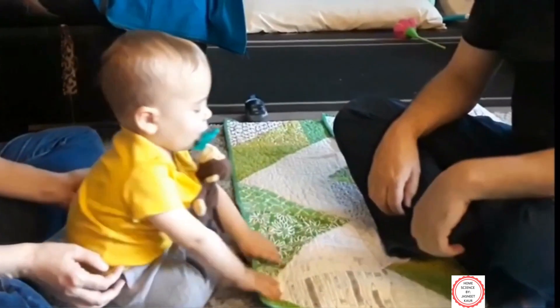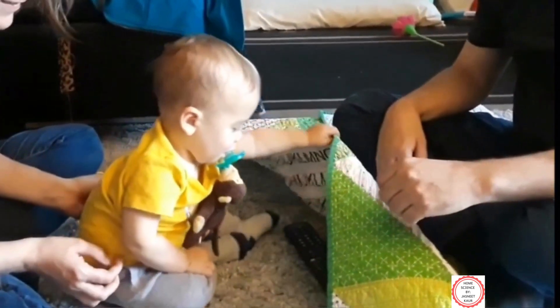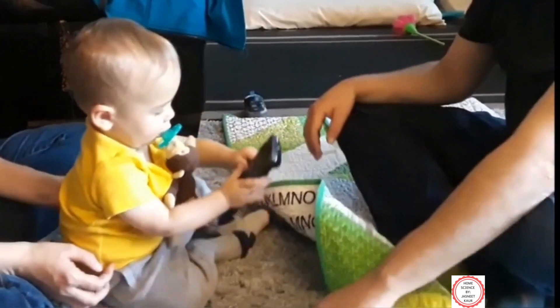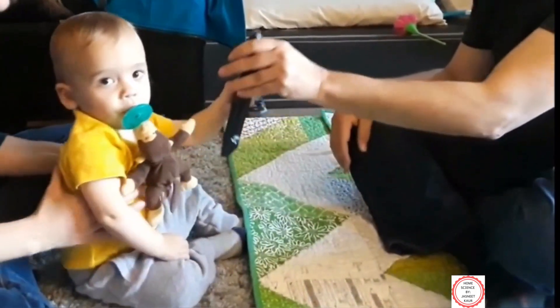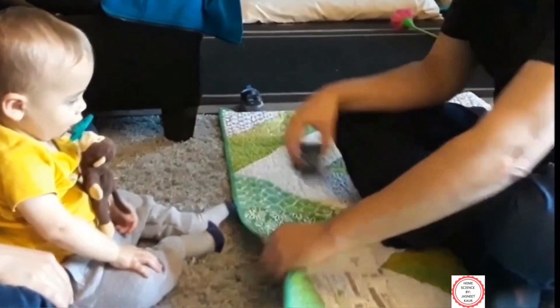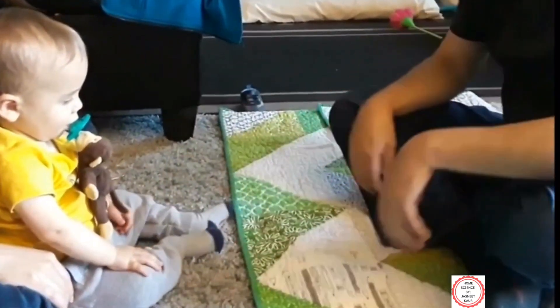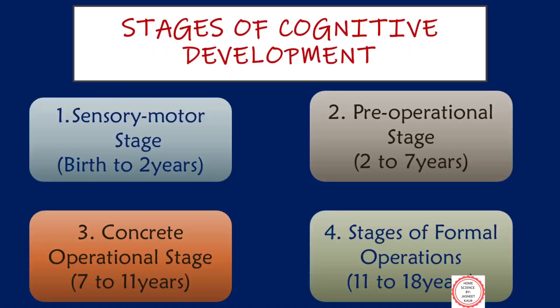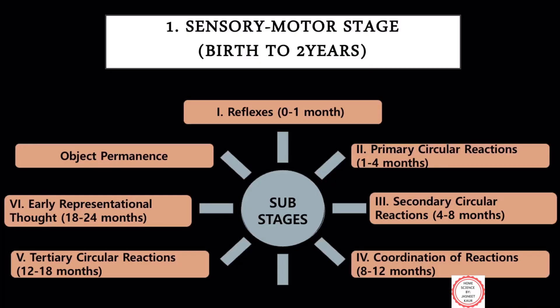The advanced version would be when a child searches for and finds an object at other places — this would be known as advanced object permanence. Students, please don't get confused between the overall four stages of cognitive development and the sub-stages of the sensory motor stage. These sub-stages of the sensory motor stage help you understand how a baby follows a series of cognitive growth in the initial years.